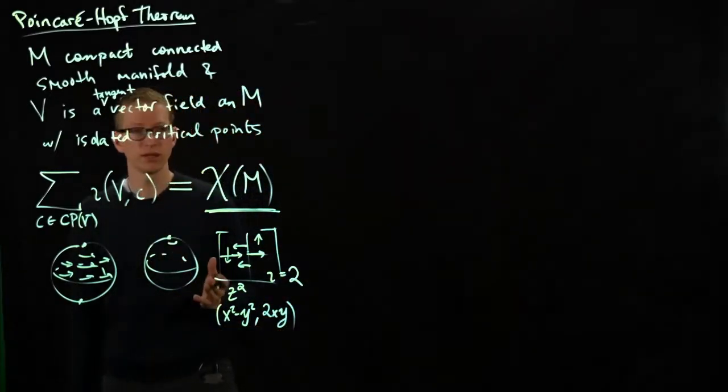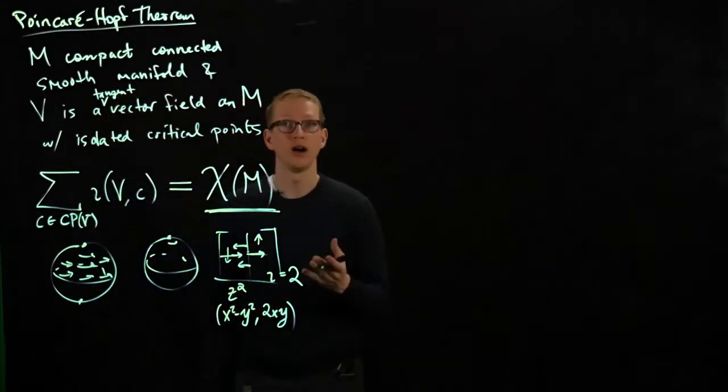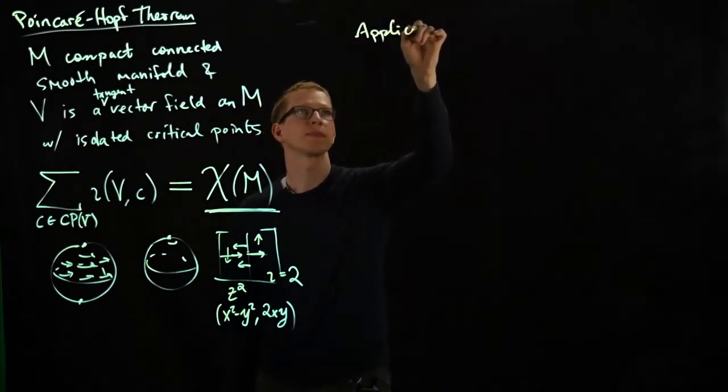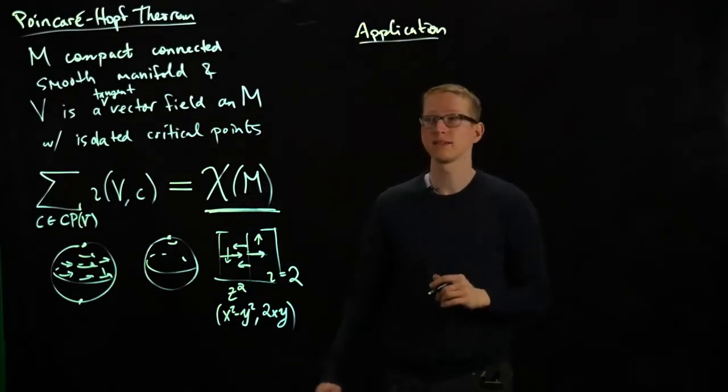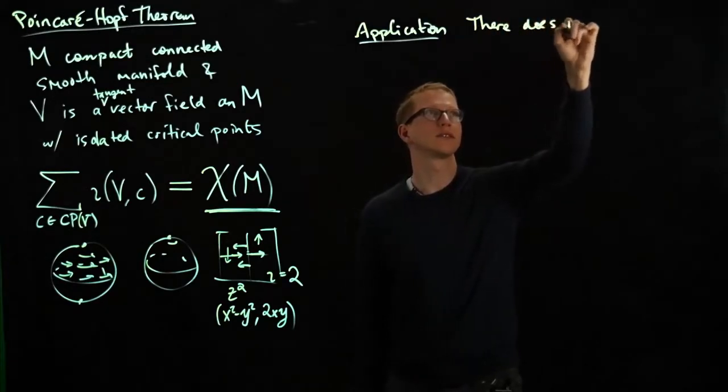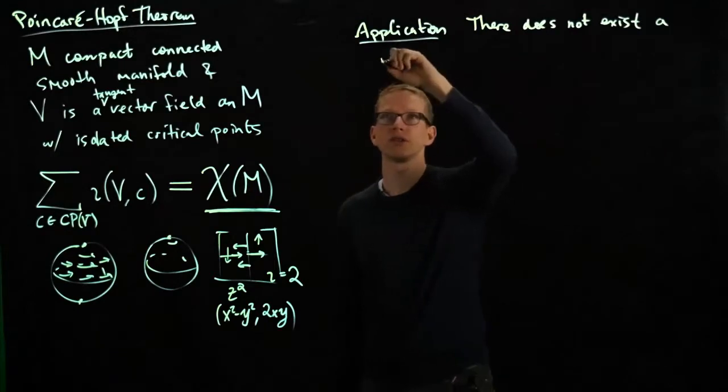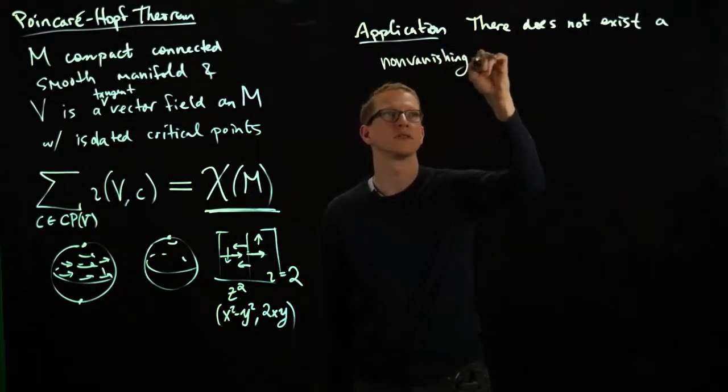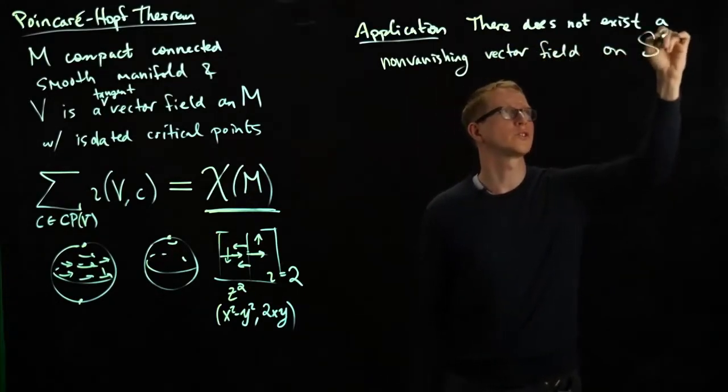So let's actually apply it to say something meaningful about vector fields on certain manifolds. One application of this fact is there does not exist a non-vanishing vector field on an even dimensional sphere.